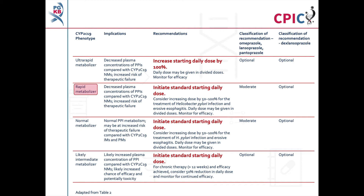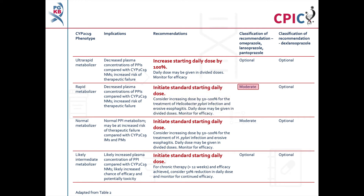Patients with a CYP2C19 rapid metabolizer phenotype will have decreased plasma concentrations of PPIs and are at an increased risk of therapeutic failure. These patients can be given the standard starting dose. A dose increase of 50–100% can be considered when treating Helicobacter pylori infection or erosive esophagitis. This is a moderate recommendation for lansoprazole, omeprazole, and pantoprazole, and an optional recommendation for dexlansoprazole.